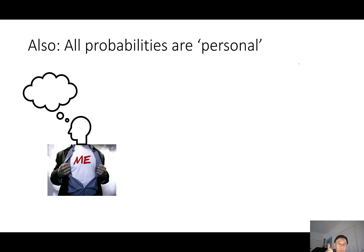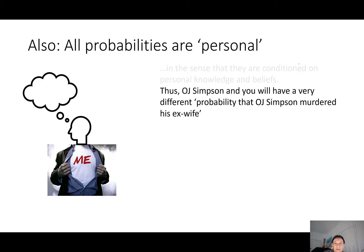It's also important to note that all probabilities are personal, in the sense that they're conditioned on personal knowledge and beliefs. So that's why, if we go back to the O.J. Simpson example, O.J. Simpson will have a very different probability that O.J. Simpson murdered his ex-wife than, let's say, you will have, or a member of the jury would have had, having seen the evidence.